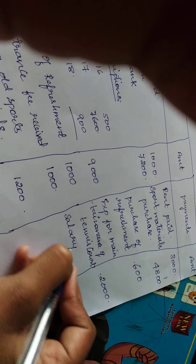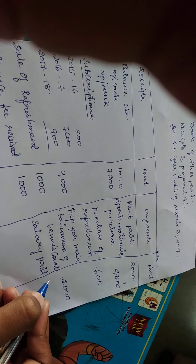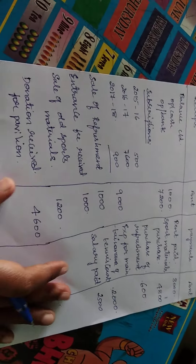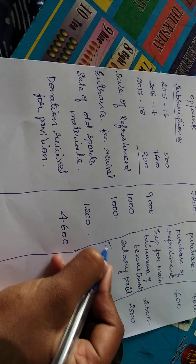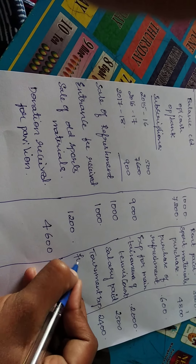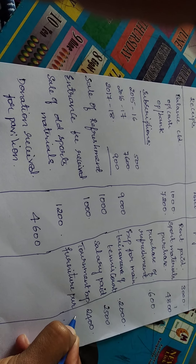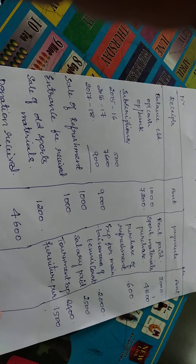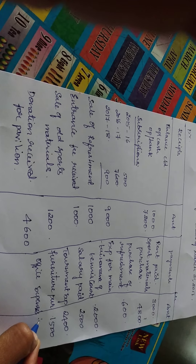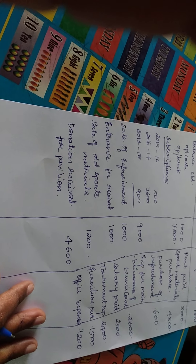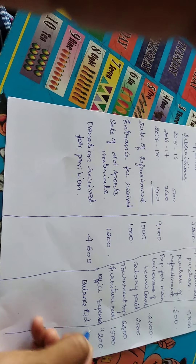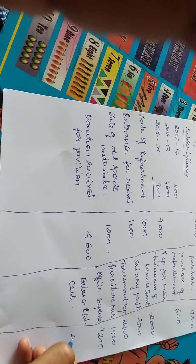Salary paid — we are making a payment of 2500 rupees. Tournament expenses — we spend money for conducting the tournament, so tournament expenses of 2400 rupees come under payment. Furniture purchase — when we purchase something the amount goes out, so furniture purchase of 1500 rupees comes under payment. Office expenses — we are spending money for office purposes, so it comes under the payment side at 1200 rupees. Closing cash in hand — we close it as balance carried down as cash, which is 400 rupees.